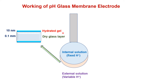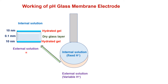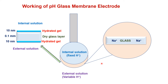The second part is the hydrated gel layer, with thickness 10 nm, which is in direct contact with the internal solution. The third part is another hydrated gel layer, also 10 nm thick, in direct contact with the external solution. The hydrated gel has exchangeable sites available for sodium ions or hydrogen ions, while the dry glass layer has fixed sodium ions. In the cross-sectional area of the glass membrane, the dry glass layer has fixed sodium ions, while the negatively charged oxygen atoms can bind cations of suitable size.